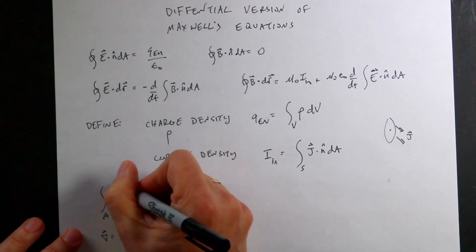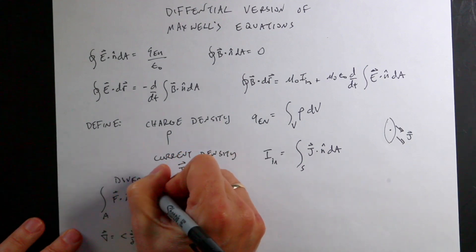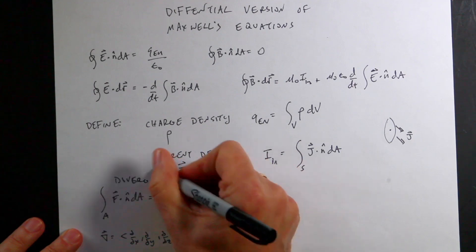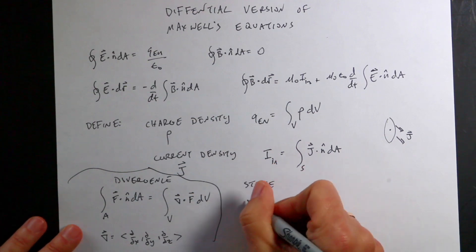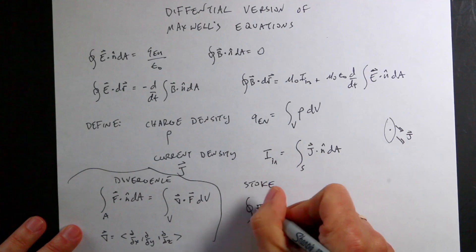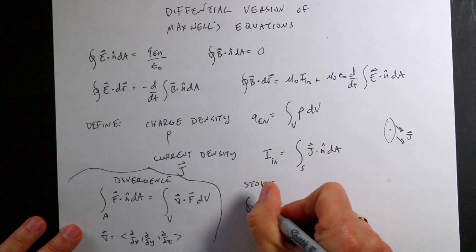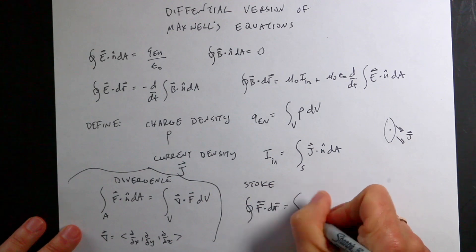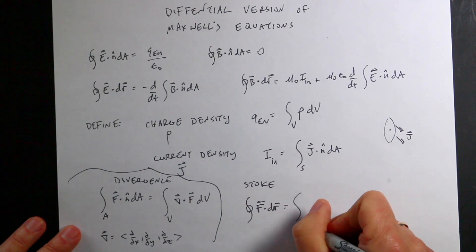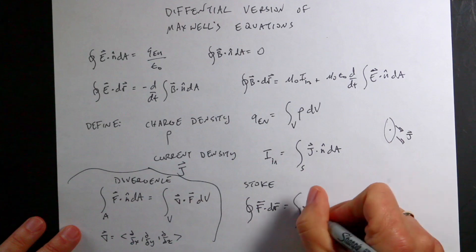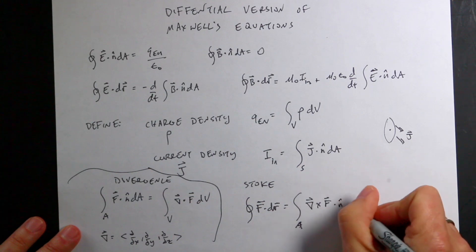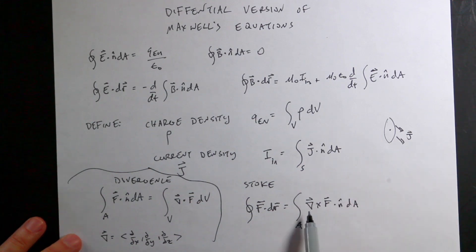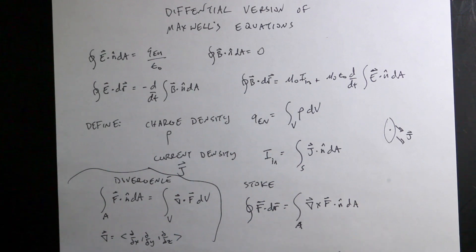The second tool is Stokes' theorem. It says that a path integral of some function f dot dR around a closed path equals a surface integral of the curl — del cross f — dot N-hat dA. So a line integral equals the flux of the curl. That's Stokes' theorem.